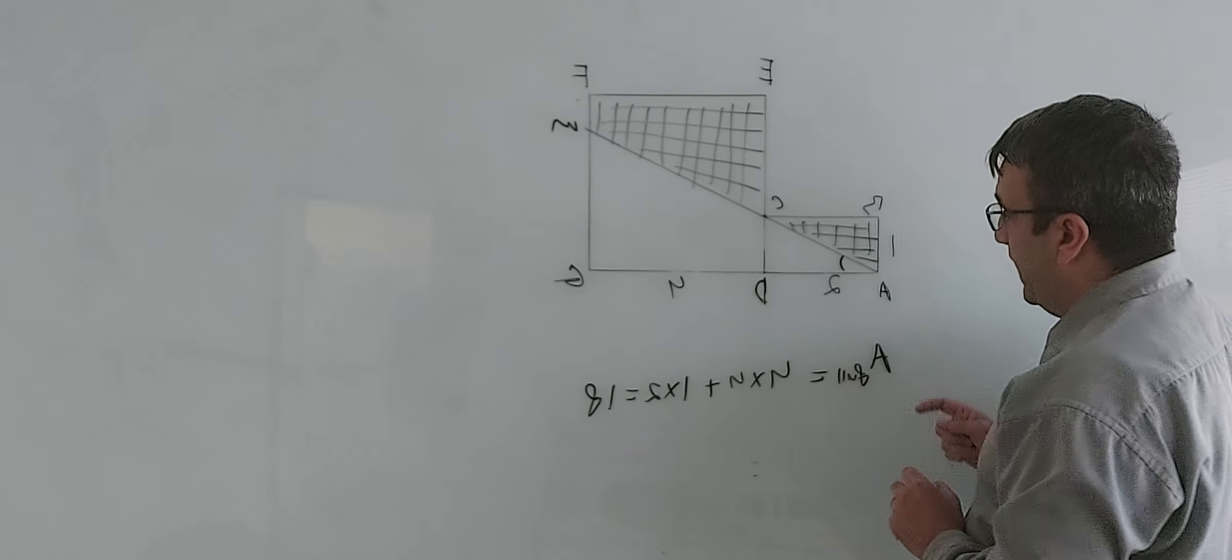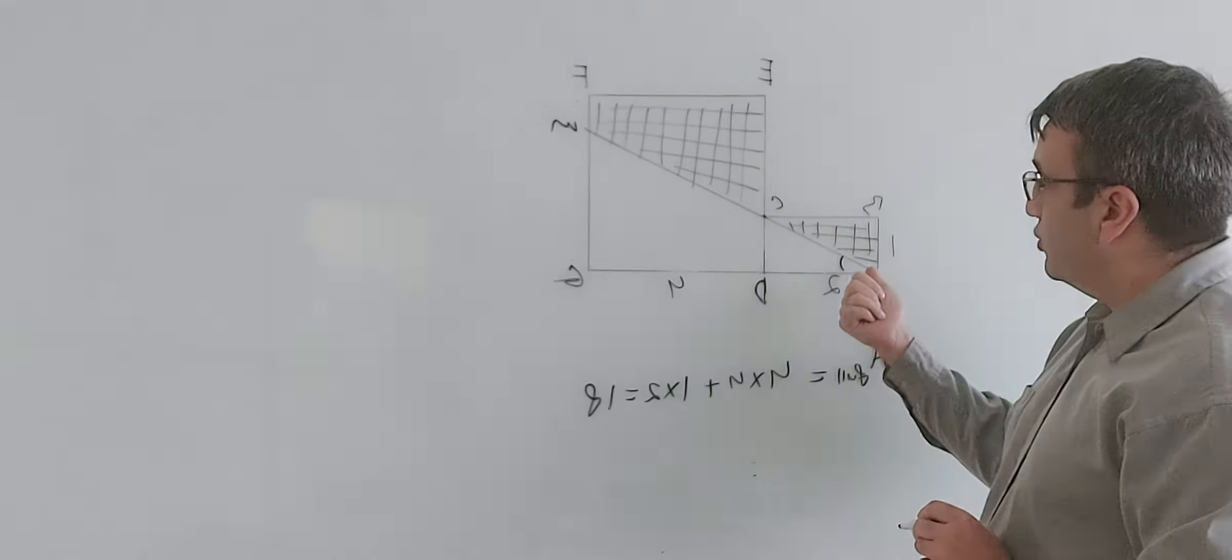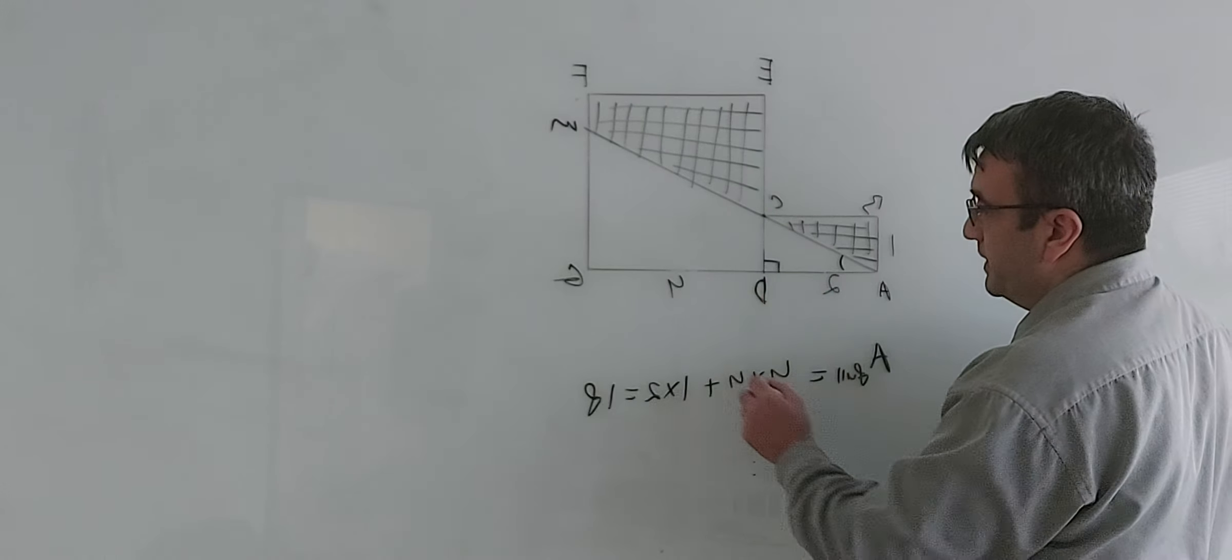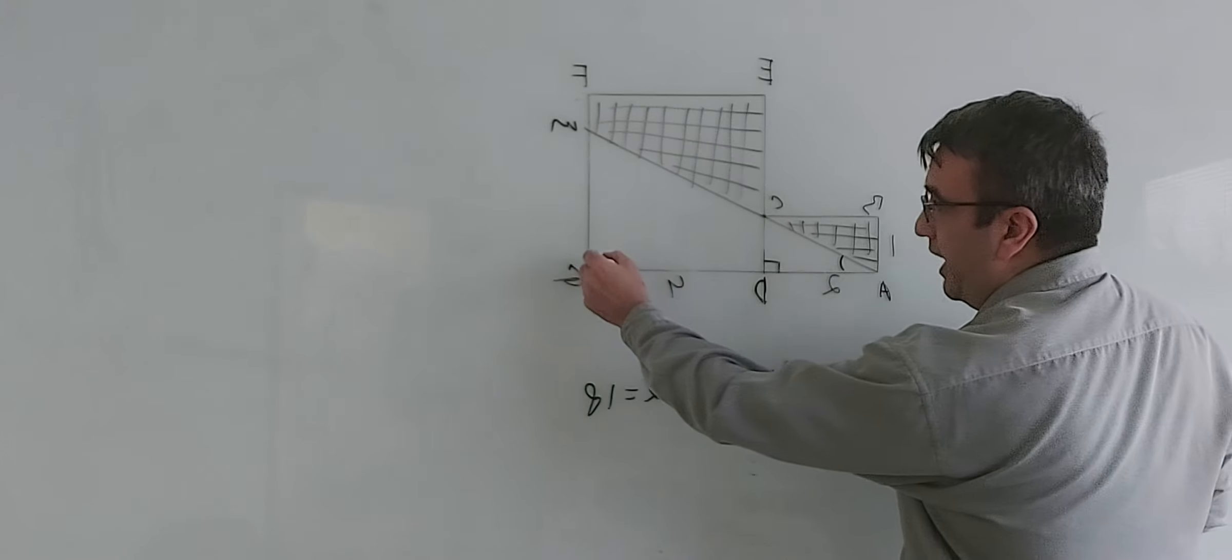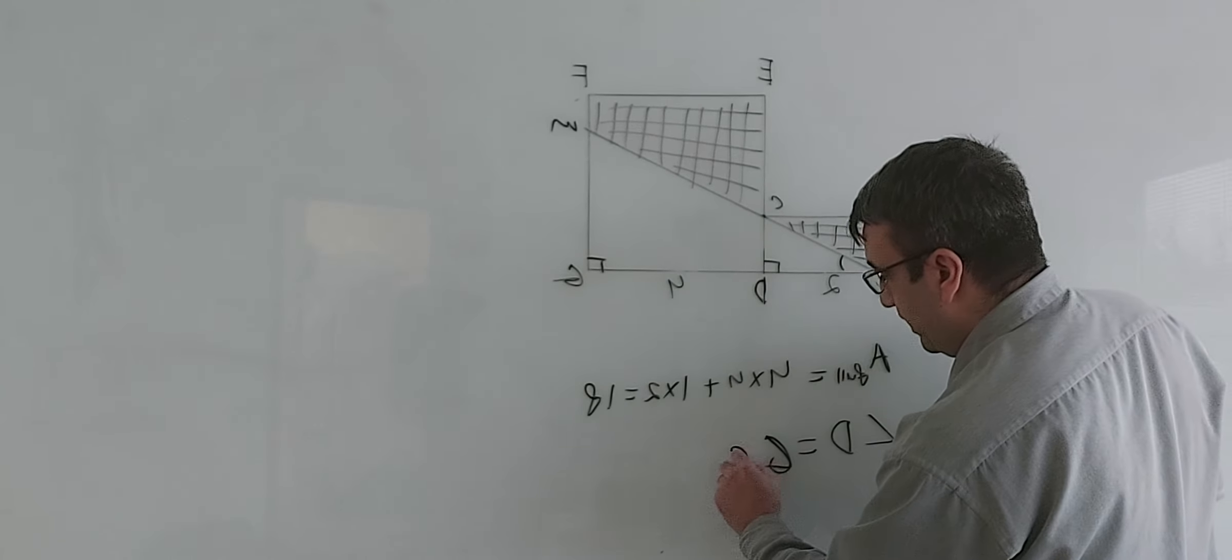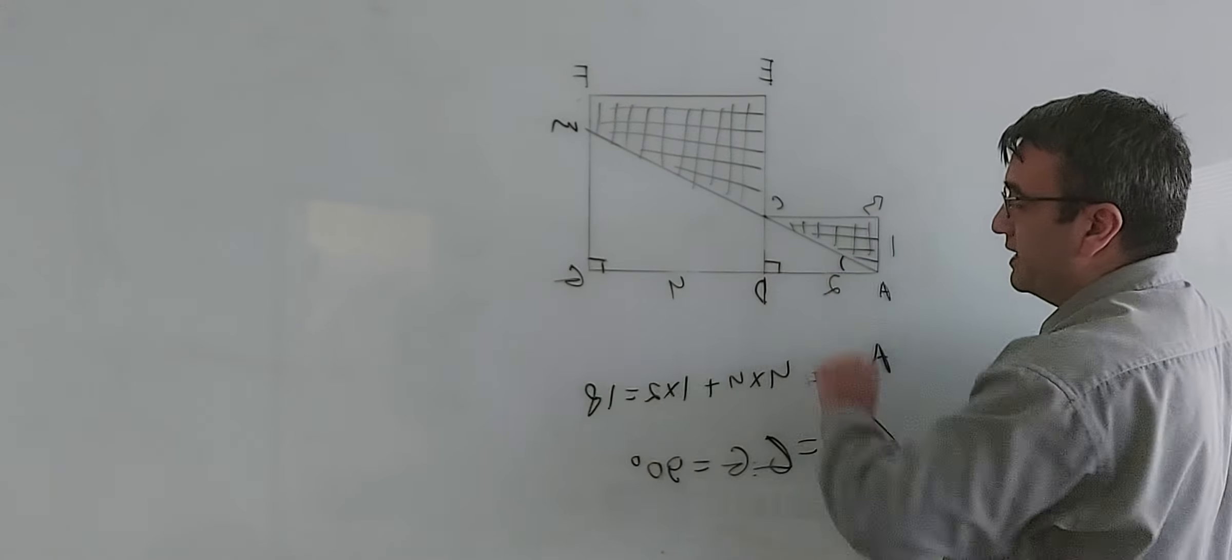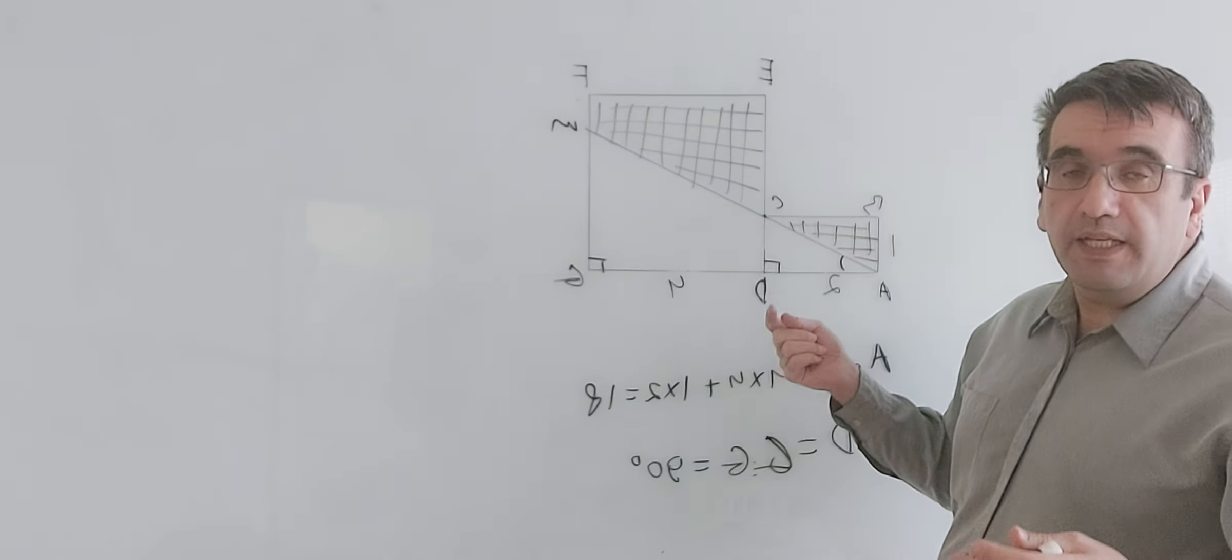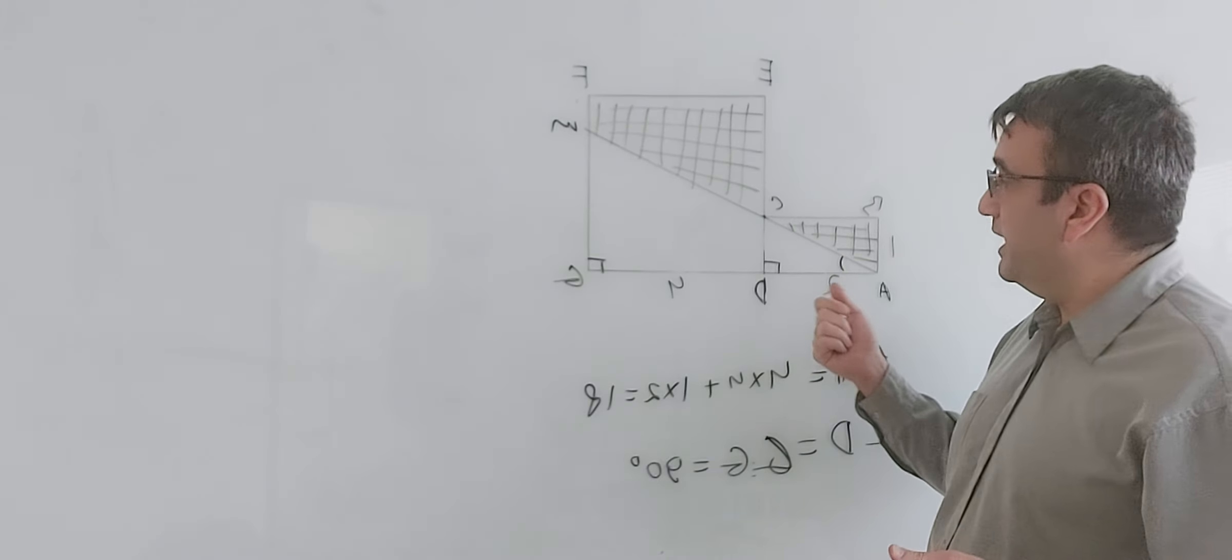So angle A is a shared angle. Both triangles share this angle. Angle D here equals angle G, and they're both 90 degrees, because this is a square and this is a rectangle. So now we know that the sum of all angles is 180 degrees.